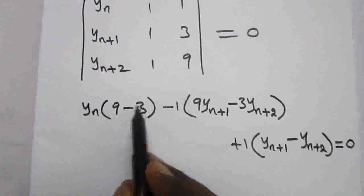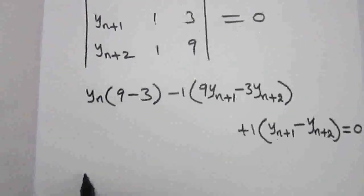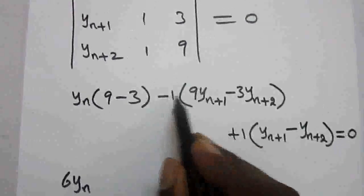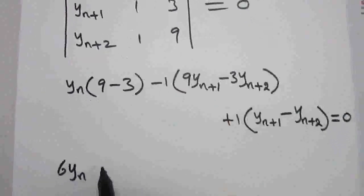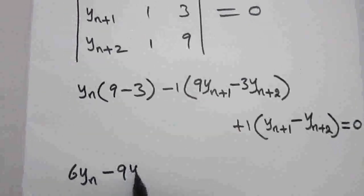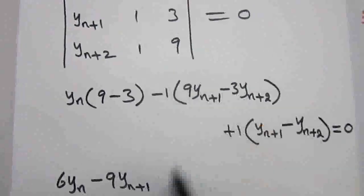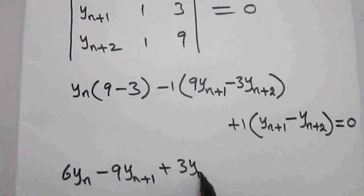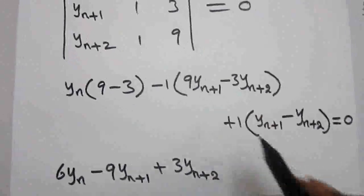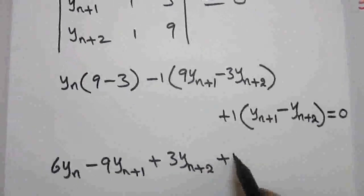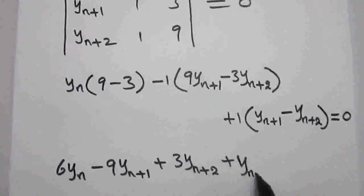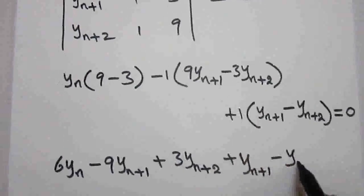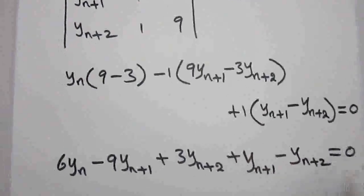Simplifying: 9 minus 3 gives 6, so 6yn. Taking minus inside: minus 9 y(n+1), minus of minus plus 3 y(n+2). And plus 1 into y(n+1) minus y(n+2), equal to 0.